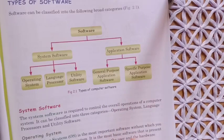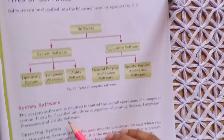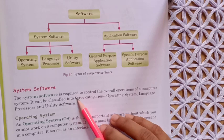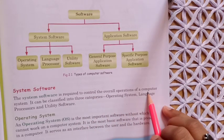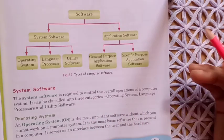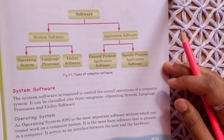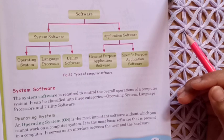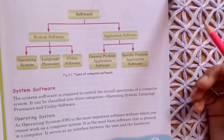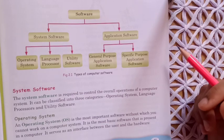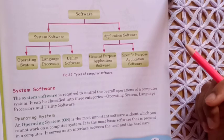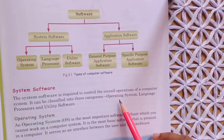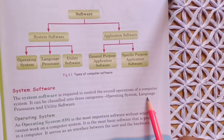Let's start with system software. System software is required to control the overall operations of a computer system. As I mentioned, the operating system is an example of system software. It works as a manager in a computer which controls the overall working of a computer system. The three parts of system software are: operating system, language processor, and utility software.